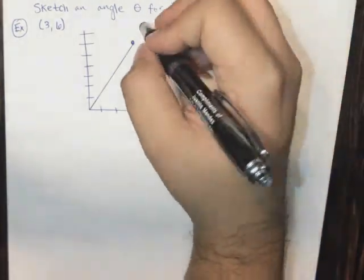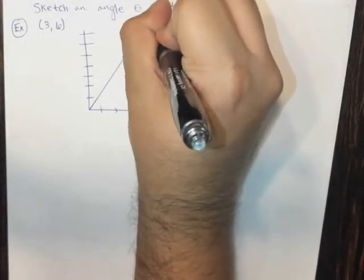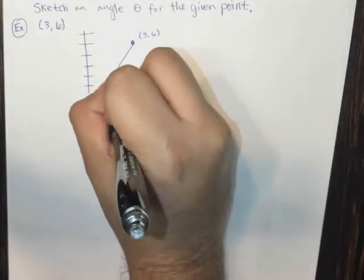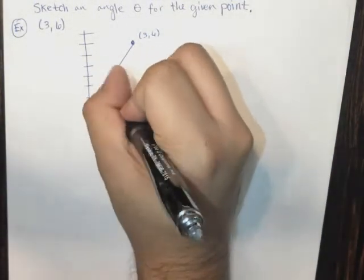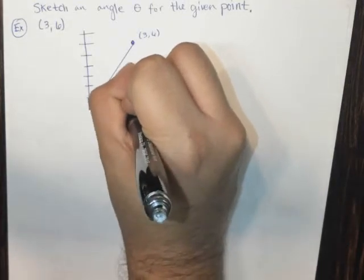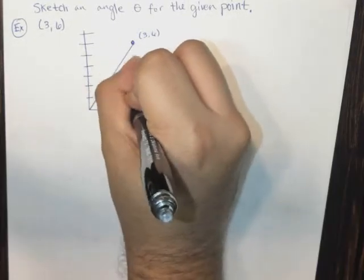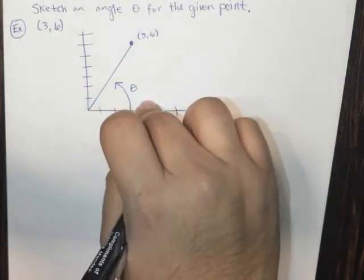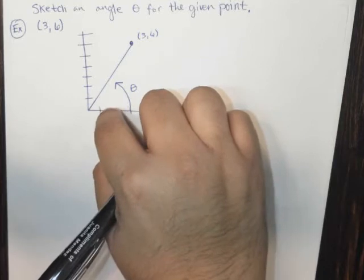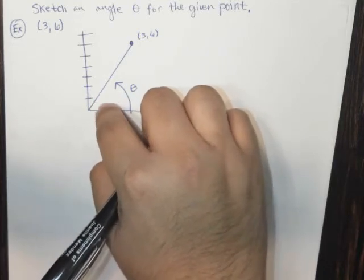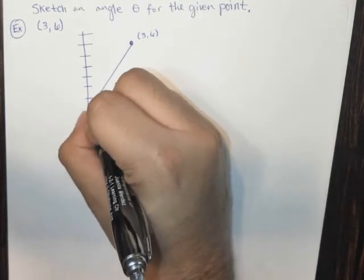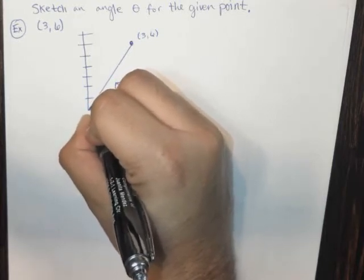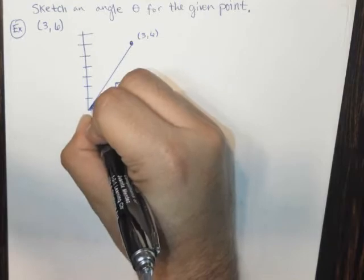So let's take a look. Let's call this the point (3, 6). And what happens here is we will draw the angle theta that they're talking about. This is basically the angle theta. This right here that's formed here is this angle, this little sliver here in this area. So this right here is this angle that they're talking about, this angle theta.